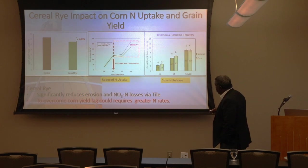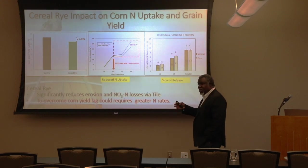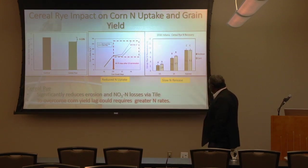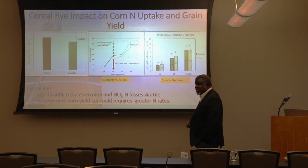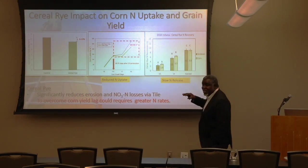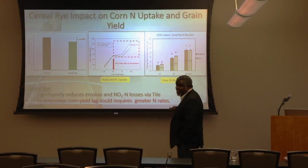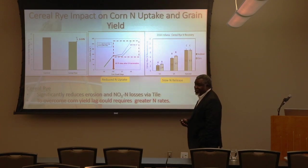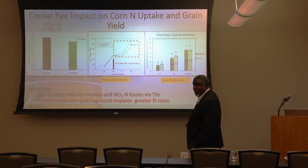We got funding to do a nitrogen tracking study. We fed nitrogen to the cereal rye, terminated it, tracked it into the soil, then planted corn and soybean and tracked nitrogen uptake at different growth stages from V5 to harvest. We found that about 9 to 10% of what the cereal rye took up in above-ground biomass is actually used by the subsequent crop. So if that cereal rye took up 40 pounds, your corn is only going to see 4 pounds. Cereal rye is very stingy.